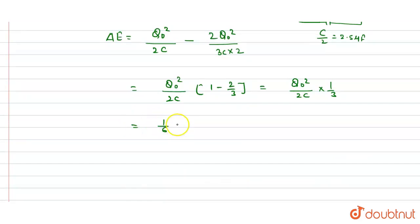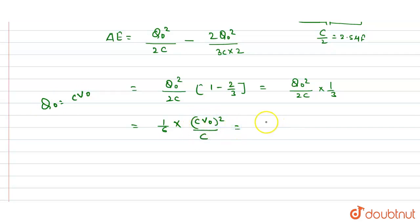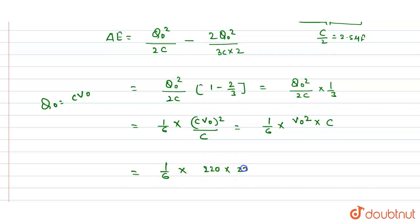So the change in energy ΔE = (1/6) · q₀²/C. Since q₀ = C·V₀, this gives ΔE = (1/6) · C·V₀². Substituting V₀ = 220V and C = 5×10⁻⁶ F, we get ΔE = (1/6) × 220 × 220 × 5×10⁻⁶, which comes out to 4 × 10⁻² Joules.